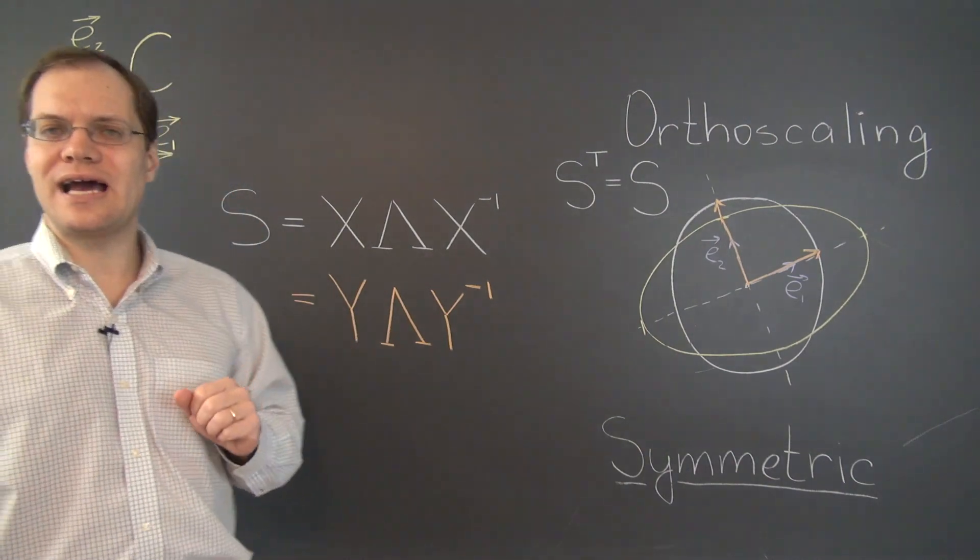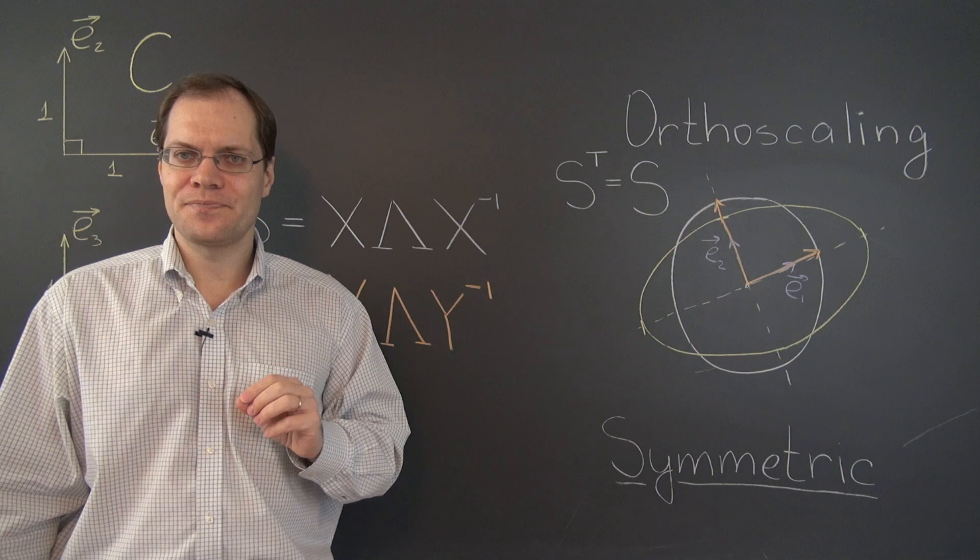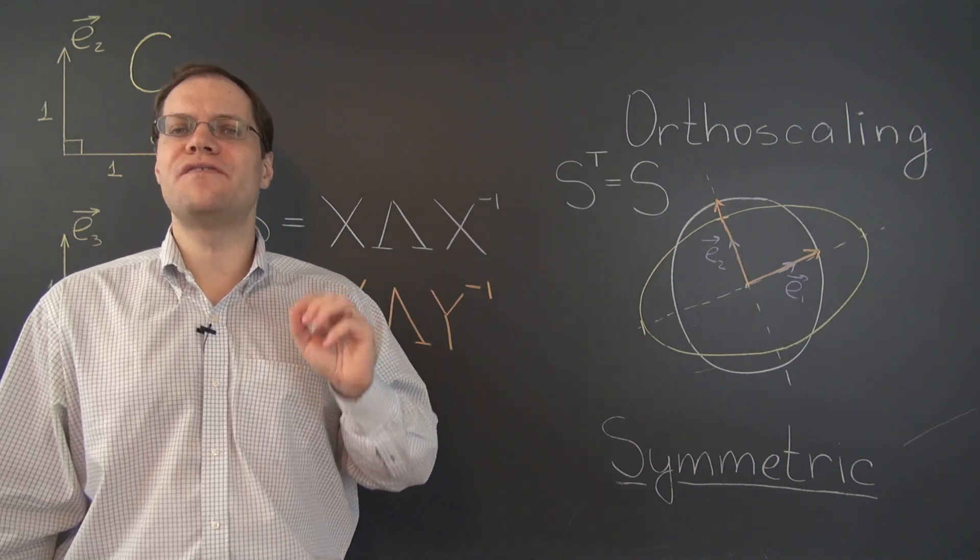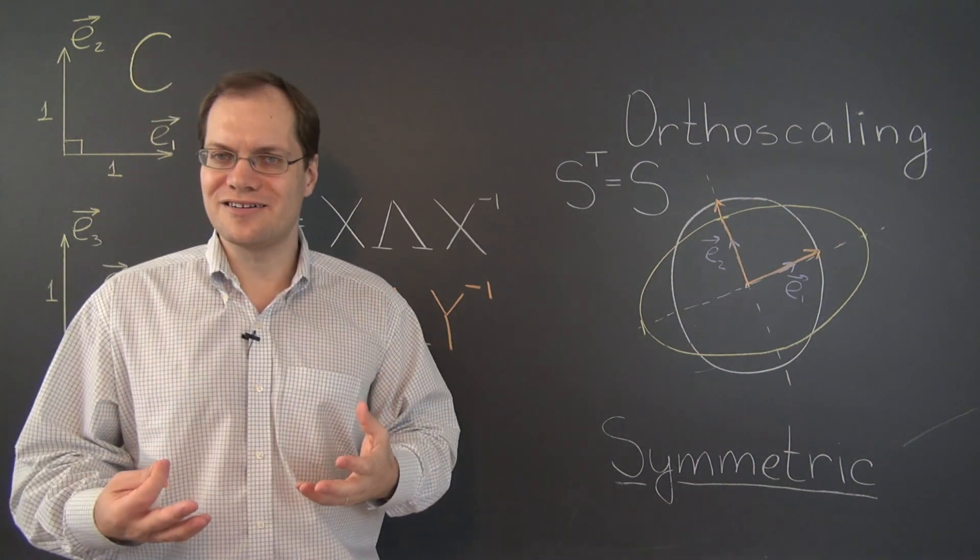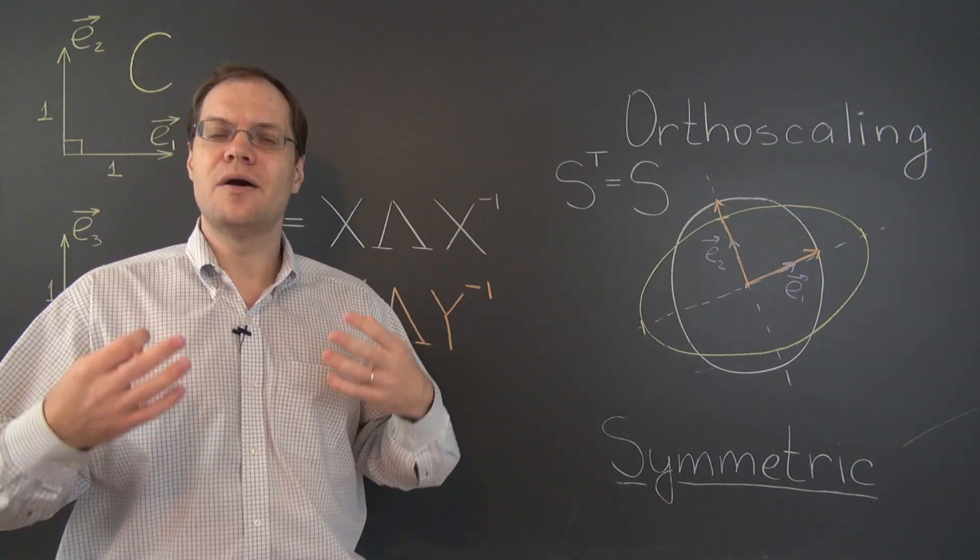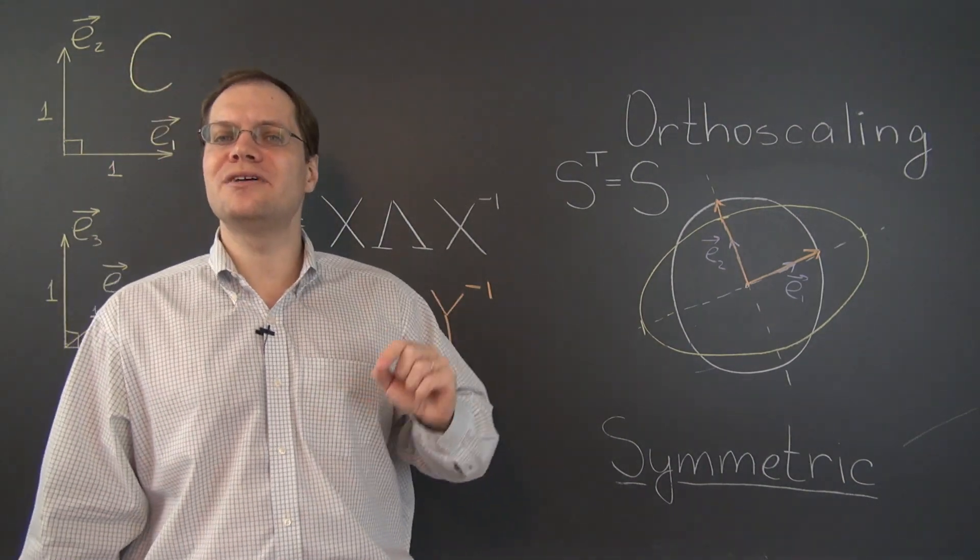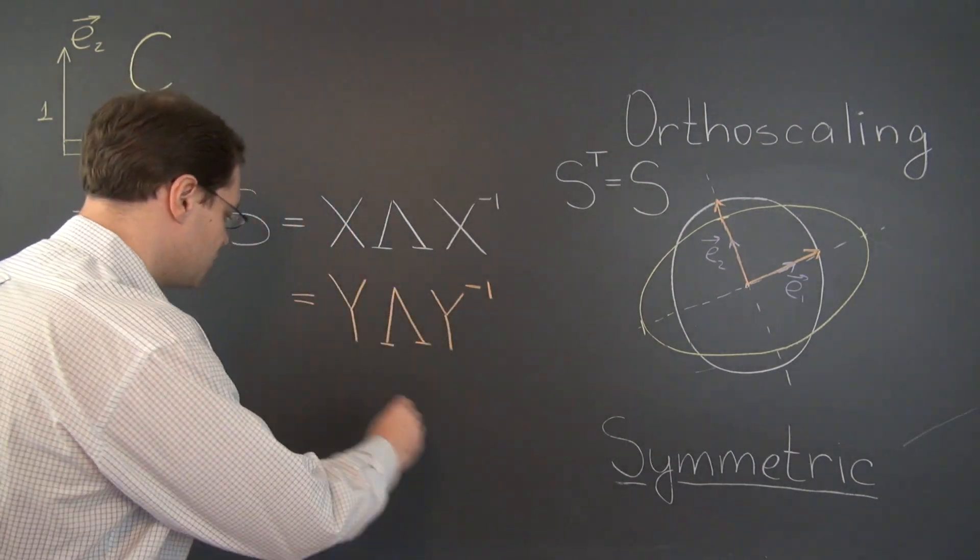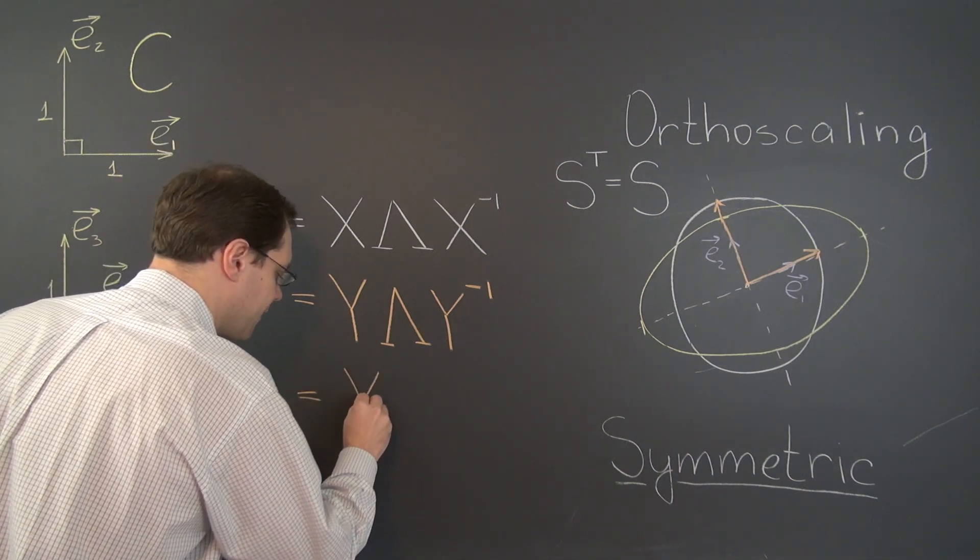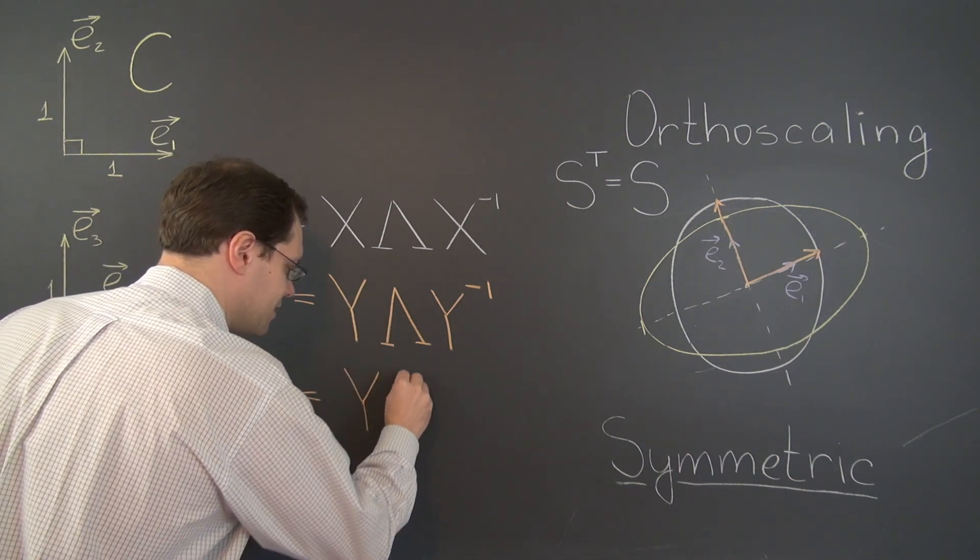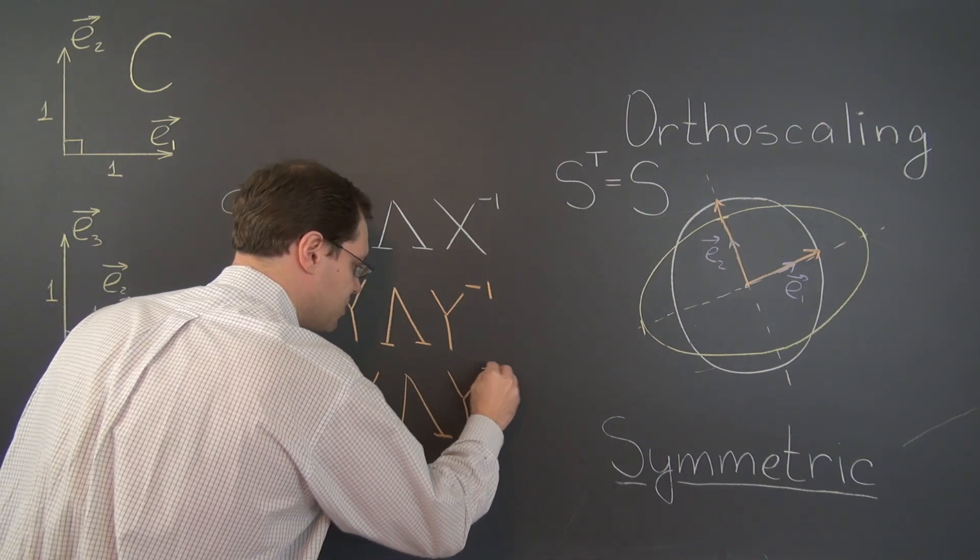So now we have a matrix whose columns are orthonormal. And these matrices are very special. This matrix is orthogonal. This matrix being orthogonal means that its inverse, right here, is actually its transpose. So we can write this as Y lambda and not Y inverse but Y transpose.